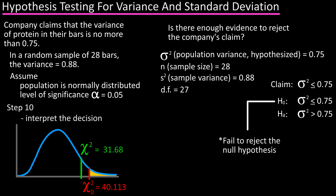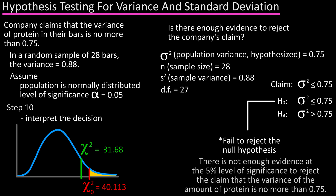Step ten is to interpret the decision. There is not enough evidence at the five percent level of significance to reject the company's claim that the variance of the amount of protein in the bars is no more than 0.75. Let's look at one more example.